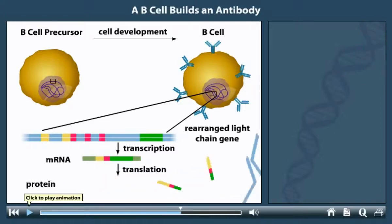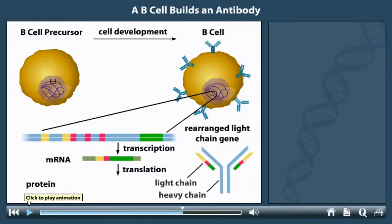Light and heavy chains then assemble to make an immunoglobulin that is unique to a particular B cell. As each B cell of the immune system develops, it randomly joins together a unique combination of segments, producing millions of unique antibodies.